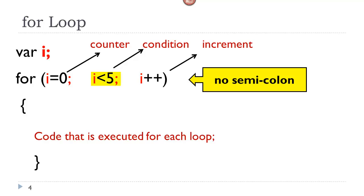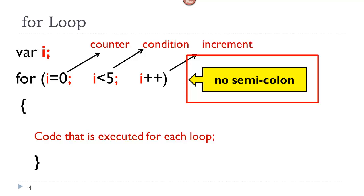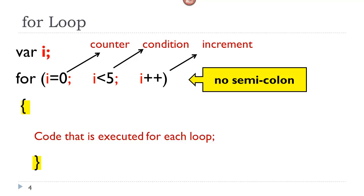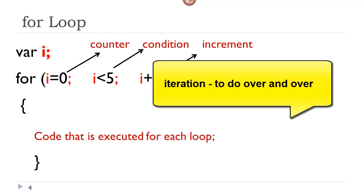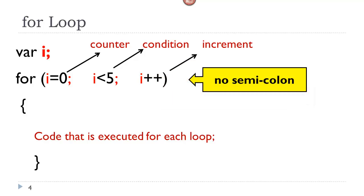Now we have our condition: i is less than five. So as long as i is less than five, we will continue this loop. Next we have the increment — remember last week we looked at the plus plus operator, which adds one to the current value of i. Notice there is no semicolon at the end of the parentheses. Similar to the if statement, the for loop is followed by opening and closing curly braces, and inside those curly braces is the code that is executed for each loop — you might hear the term iteration.